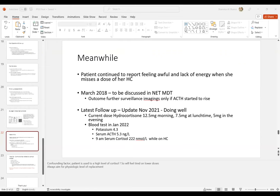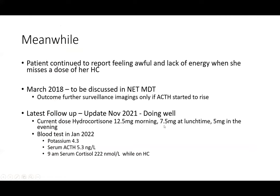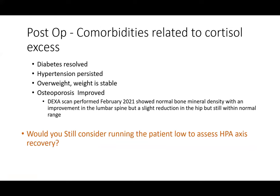The patient was kept on hydrocortisone 12.5/7.5/5 based on her continuous complaints of fatigue and lack of energy. Her latest blood test in January 2022 showed normal potassium, ACTH 5.3, and a 9 a.m. serum cortisol of 222. In terms of comorbidities: her diabetes resolved, but she continued to have hypertension managed with amlodipine.